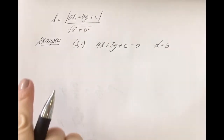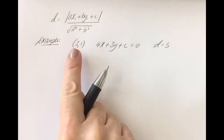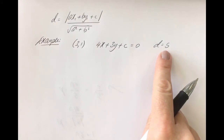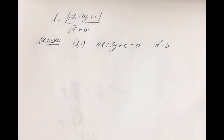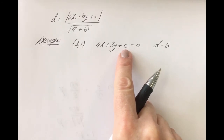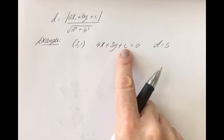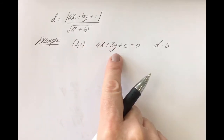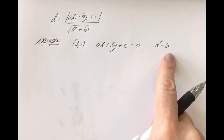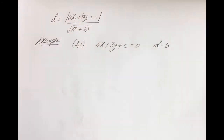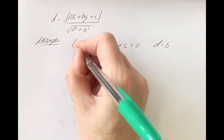In this next example, the question says the distance between a point and a line is 5 units, and using our formula we should be able to figure out the value of C. The question implies we should be getting two values for C. Find the values of C if the perpendicular distance between the point (3, 1) and the line 4x plus 3y plus C equals 0 is 5 units. Pause the video if you'd like a head start, or continue if you need more help.